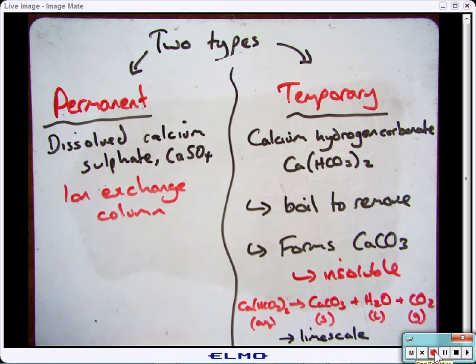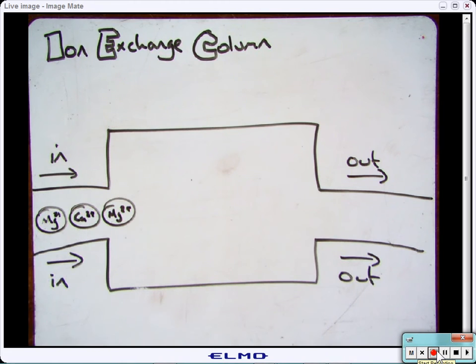To get rid of permanent hardness, we use an ion exchange column. An ion exchange column is packed with tiny plastic beads made of a special resin, which is a type of polymer. Attached to this resin are very weakly attached sodium ions.